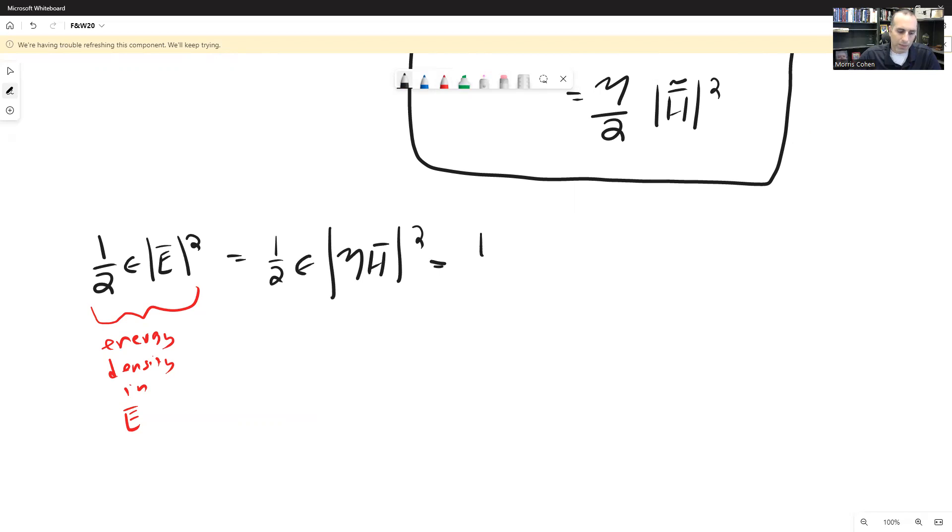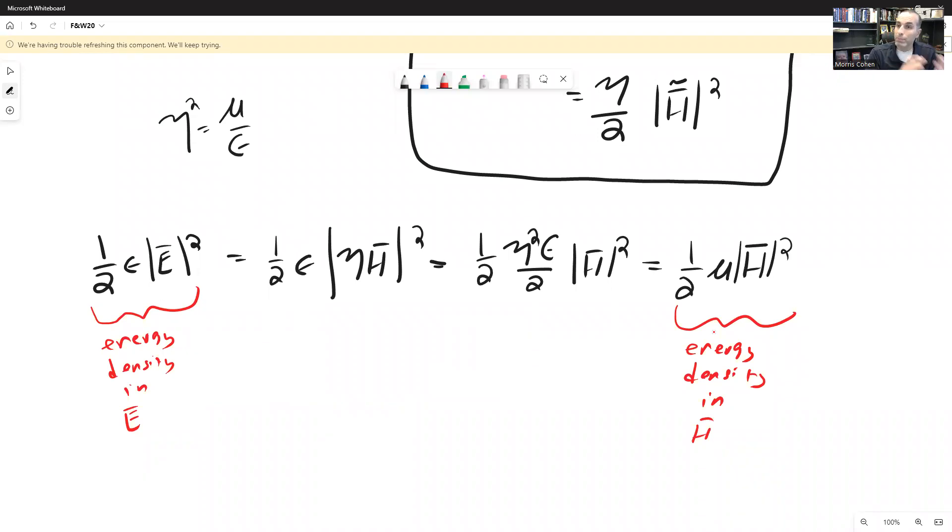Now we're going to expand this. This is one-half times eta squared epsilon over 2 times H squared. And now since eta squared equals mu over epsilon, let's plug that in. And then this works out to be one-half times mu times the intensity of H squared. And look at this. We basically have started out with the energy density in the electric field, applied only the idea that we have an intrinsic impedance between the electric field and the magnetic field. And with that alone, we have gotten ourselves to the exact same relationship as the energy density in the magnetic field.